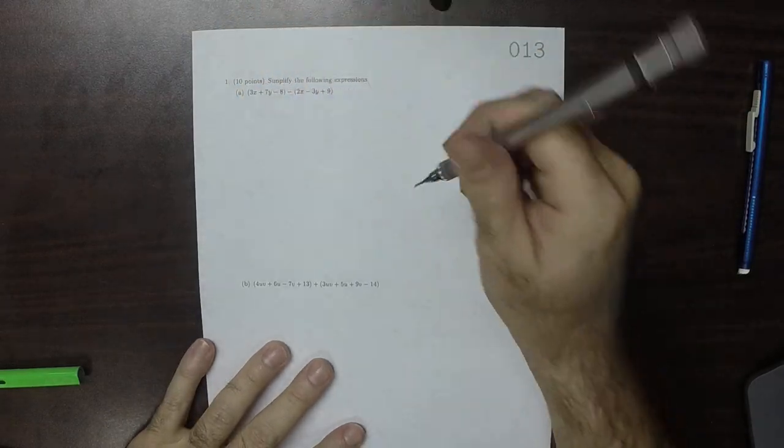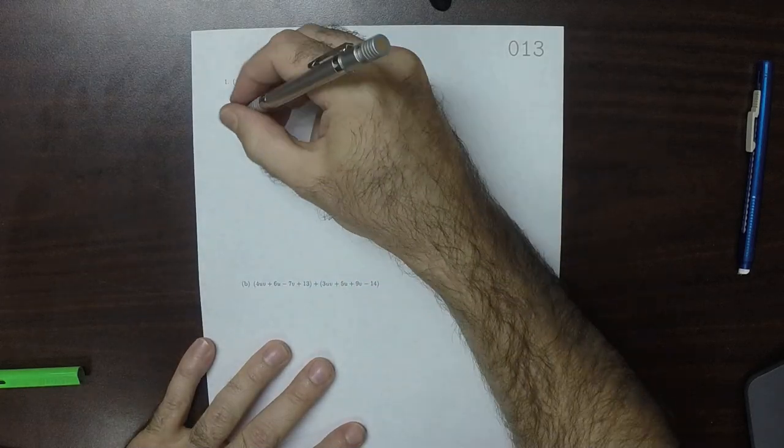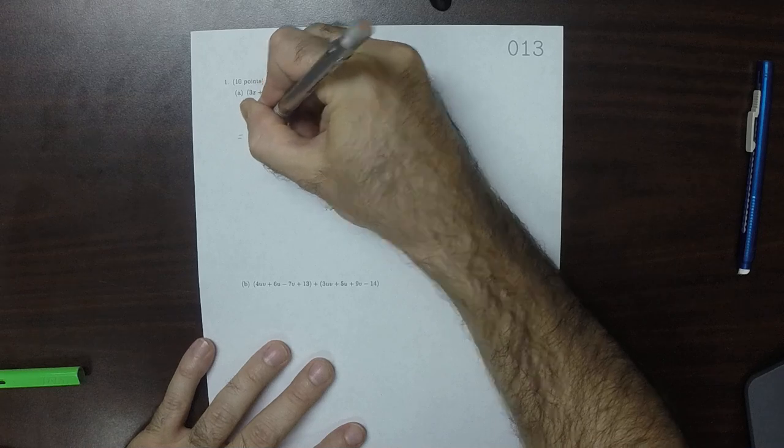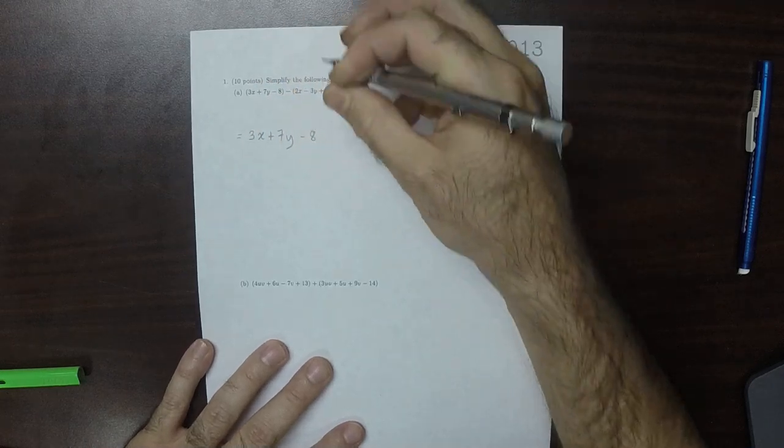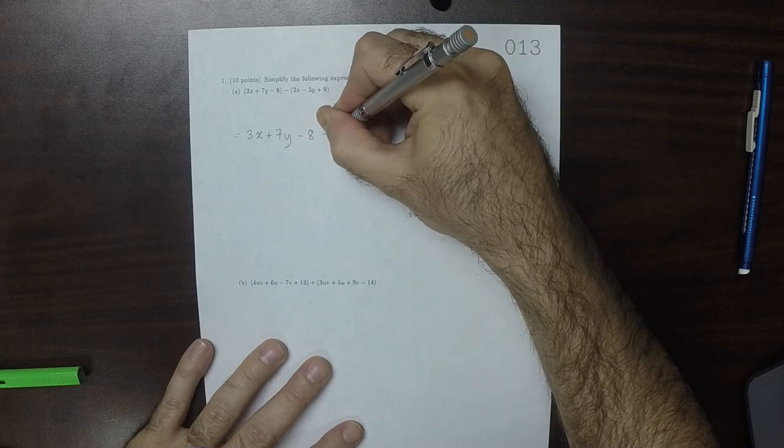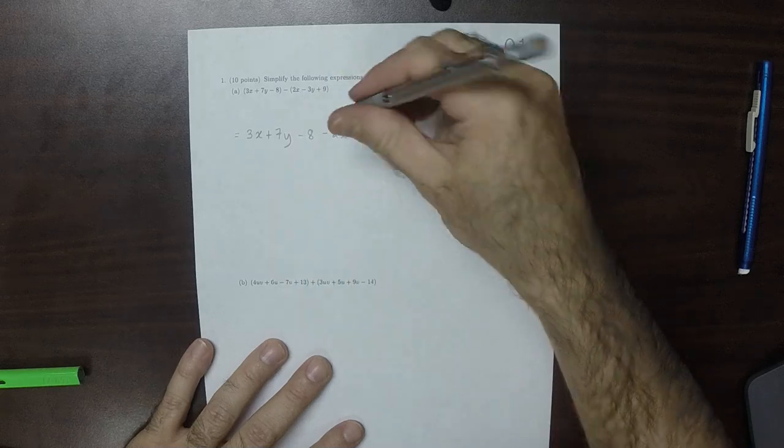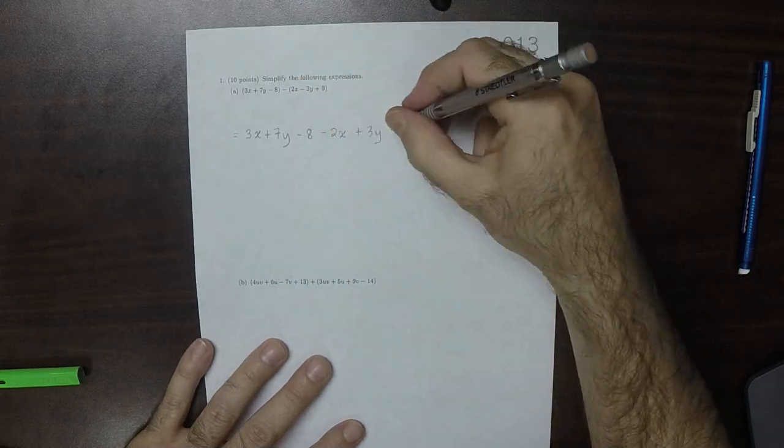So then, we'll distribute that subtraction so that it looks like 3x plus 7y minus 8, and then minus 2x plus 3y, because we're subtracting negative 3y. And then minus 9.